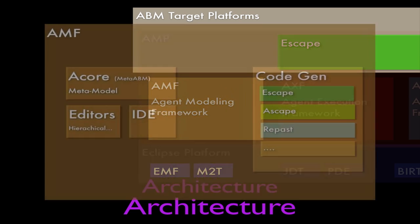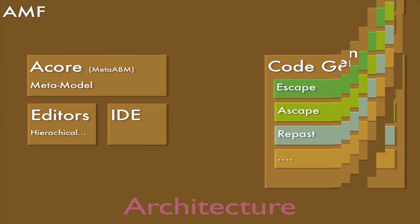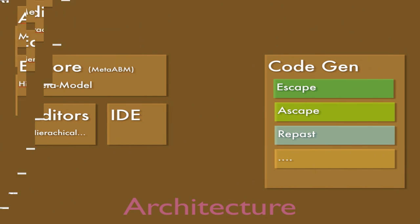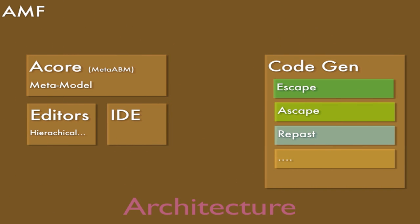There's some confusion here. The agent modeling framework is part of the agent modeling platform, but the agent modeling platform — the AXF and AGF components — are not dependent on AMF. And AMF can generate code outside of the agent modeling platform. So AMF is analogous to EMF, the Eclipse modeling framework.